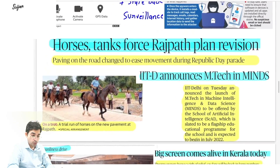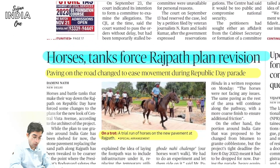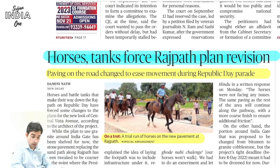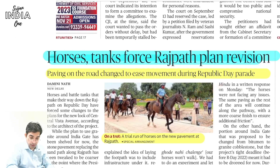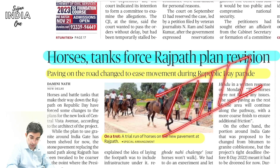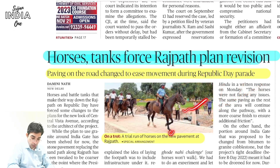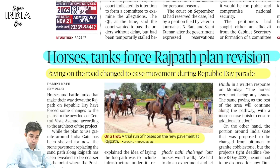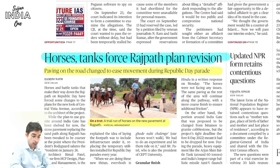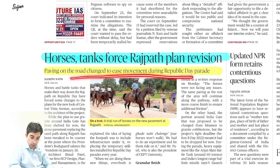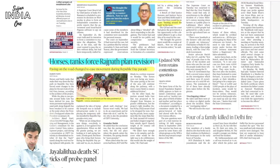The second news is about Horses, Tanks, Force, Rajpath plan revision. In the Republic Day parade, there is a horse contingent and tanks like the Arjun tank. The Central Vista revamp must ensure that the tiles laid are suitable for horses — their hooves have difficulty on concrete — and that the road can withstand horse units and rolling tanks during the Republic Day parade.